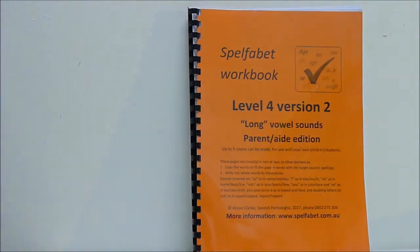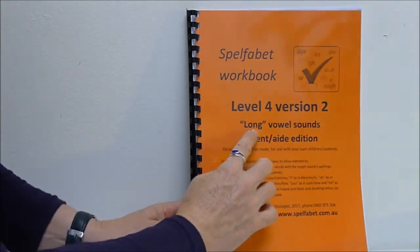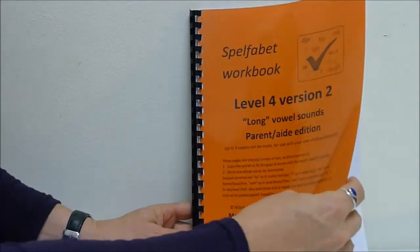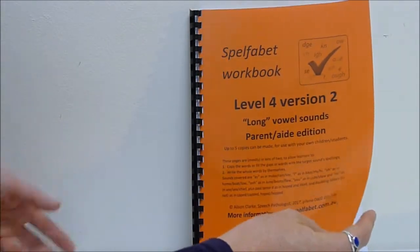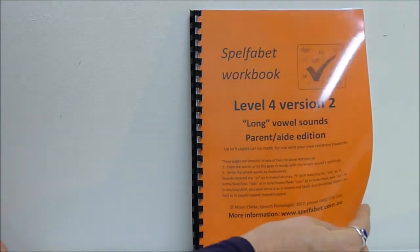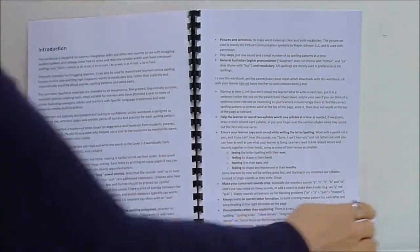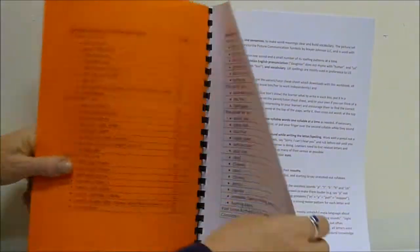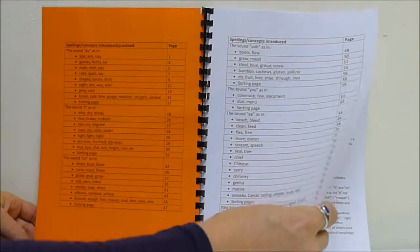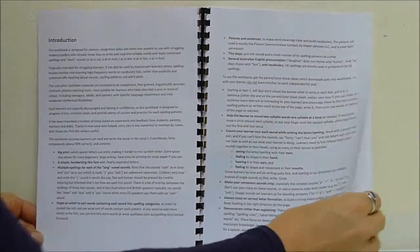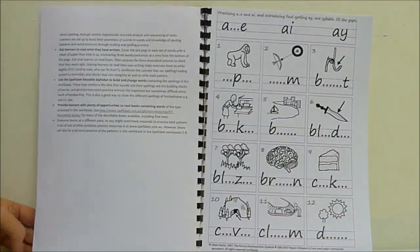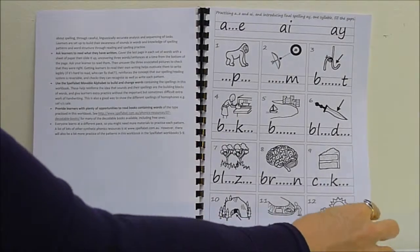Here's a short video tour of the Spell for Bet level 4 version 2 workbook. This one is launching into teaching about what are called long vowel sounds. They're not really longer versions of short vowel sounds, A-E-I-O-U and a few bits and pieces that go with them in this workbook. There's a contents page, I'll put that on the website so that you can see what exactly the book covers. Introduction with a bit of summary of how to use it.